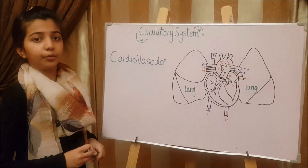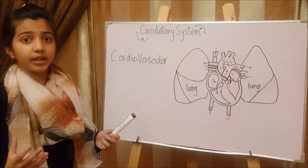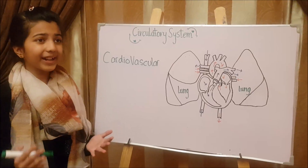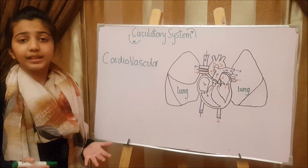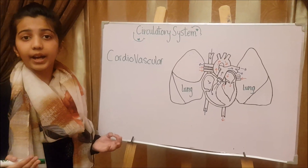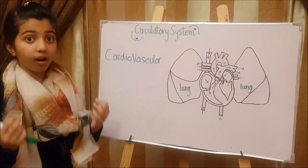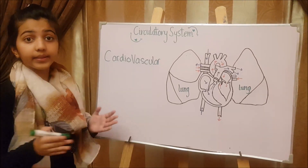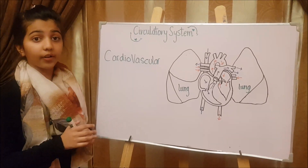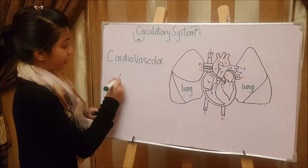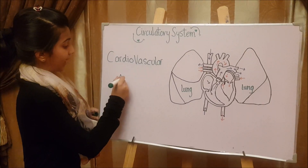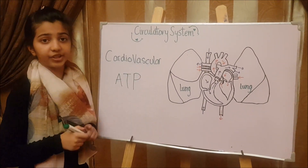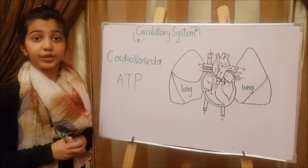Every one of you knows that your heart pumps blood. But why is blood so important? Why do we need it to survive? Well, blood contains oxygen, which we really need to survive. Our cells and tissues need oxygen to make energy, also called ATP, which is an abbreviation of adenosine triphosphate.